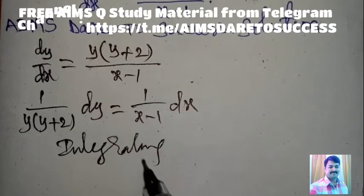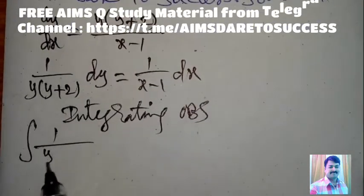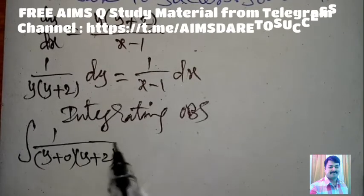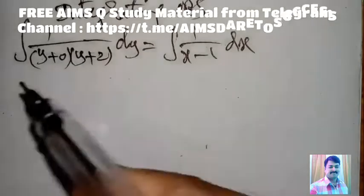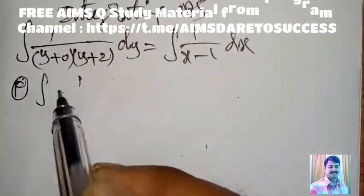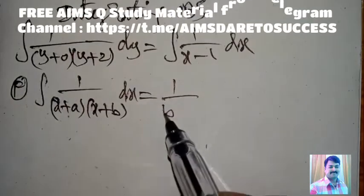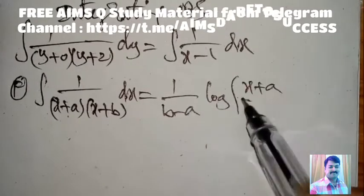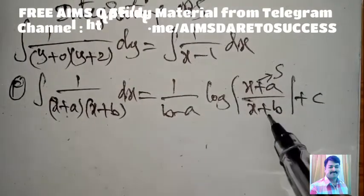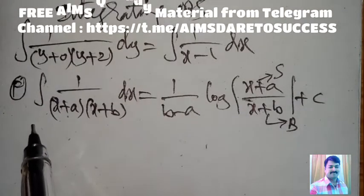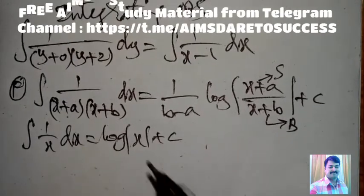Now apply integration on both sides: integral of 1/[(y + 0)(y + 2)] dy = integral of 1/(x − 1) dx. I will write a simple formula: integral of 1/[(x + a)(x + b)] dx = 1/(b − a) × log|(x + a)/(x + b)| + C, where (x + a) is the smaller and (x + b) is the larger value. Also, integral of 1/(x + b) dx = log|x + b| + C.